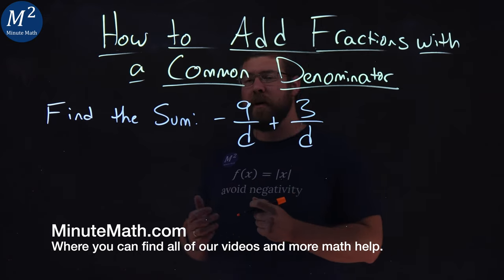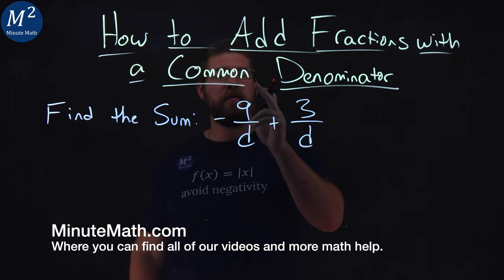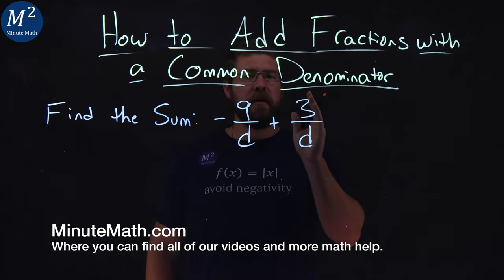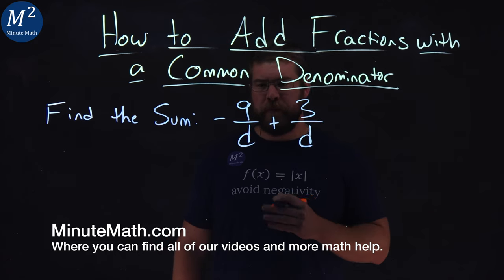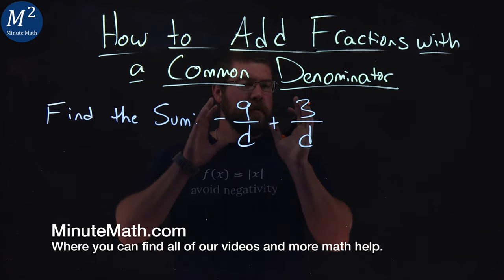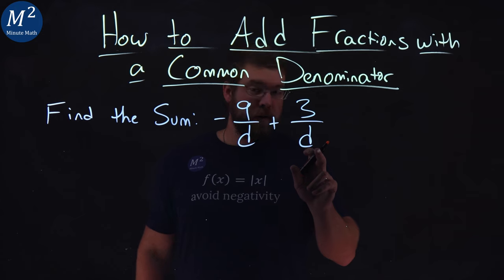We're given this problem right here, find the sum of negative 9 over d plus 3 over d. Now, one thing I'm first noticing, we have a common denominator, d.